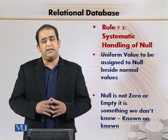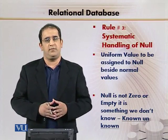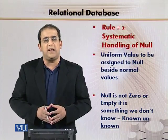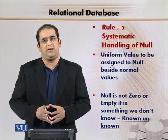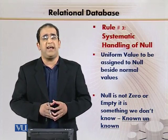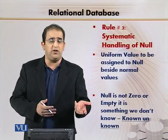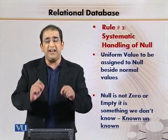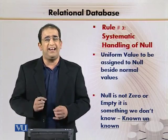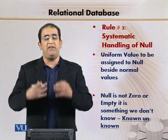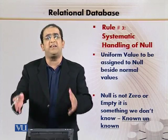Jo cheez hume amuman miss ho jati hai ya hum overlook kar jaate hain, woh yeh hai ke hum null ko zero ka dete hain, null ko empty ka dete hain, null ko space ka dete hain — space bar press kar diya, null ho gaya. This is wrong. Actually null ka matlab yeh hai ke null can be anything — it can be space bar, it can be one, it can be zero, it can be a numeric value, it can be a, b, c, whatsoever. But the key concept here is: we don't know what null is. It's a known unknown value.